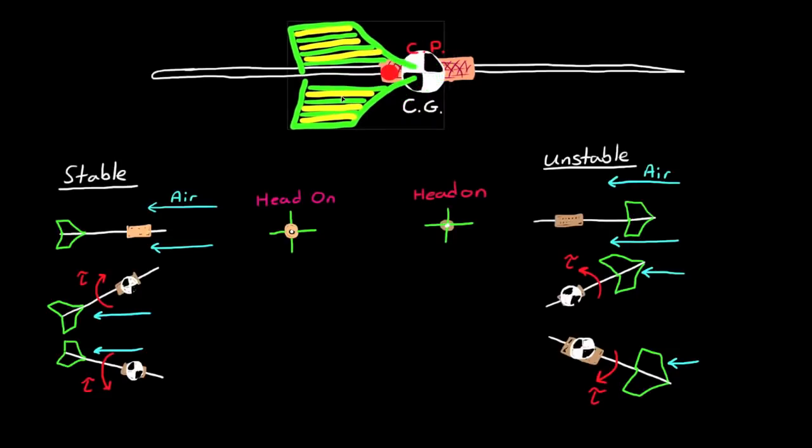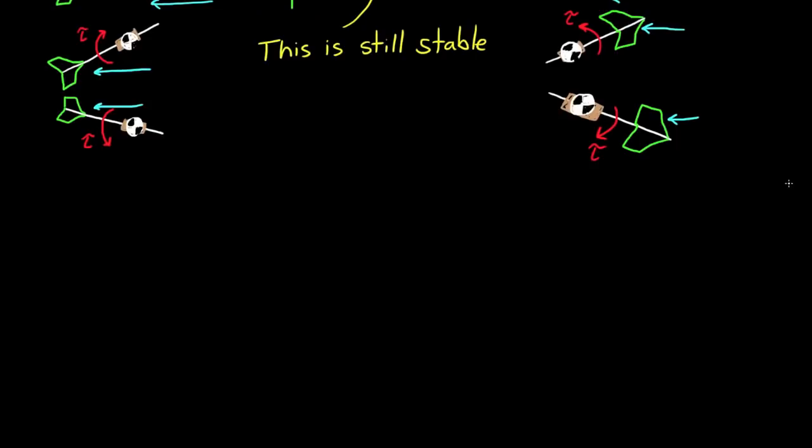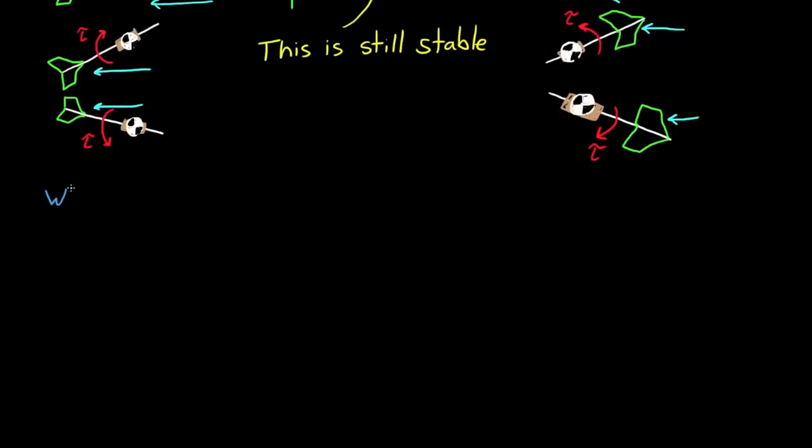Practically speaking though, if we move the flights so that the center of pressure is ever so slightly aft of the center of gravity, then the dart will be stable. And the reason is because this will still generate a restoring torque, although very small. But this brings up an interesting question: How stable is stable enough?